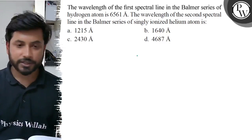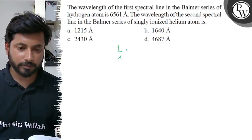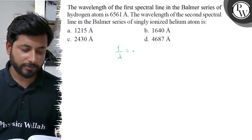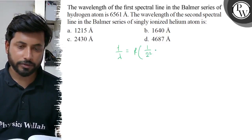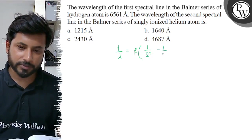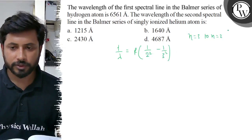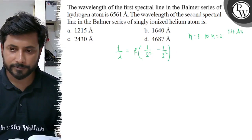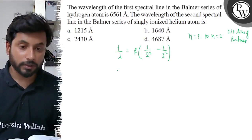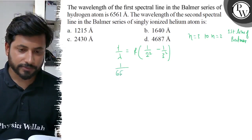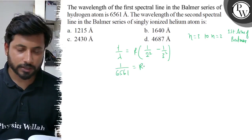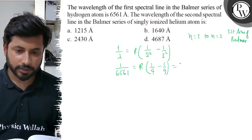In this case, we have written here that 1 by lambda equals R times 1 by 2 squared minus 1 by 3 squared, because the first line of Balmer series corresponds to n equals 3 to n equals 2. So we put values: 1 by 6561 equals R times 1 by 4 minus 1 by 9, which equals 5R by 36.